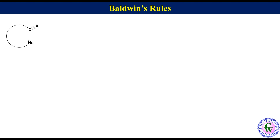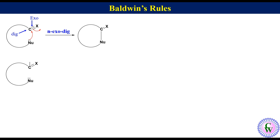If the substrate has a nucleophile and an electrophile, the intramolecular reaction will give a cyclic structure. Since the bond being broken is exo and the electrophilic center is diagonal (sp-hybridized), this reaction will be named N-exodig. For another substrate where cyclization gives a product in which the bond being broken is exo and the electrophilic atom is trigonal (sp2-hybridized), this reaction will be named N-exotrig.